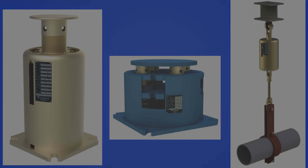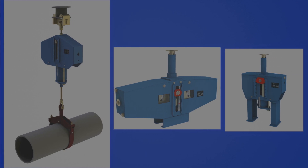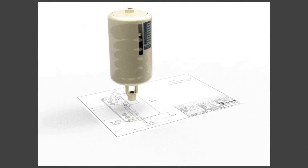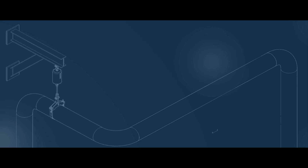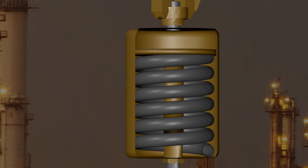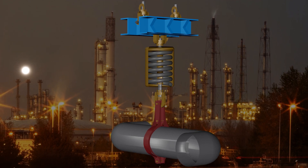Two of the most common static pipe supports that allow thermal expansion and contraction are variable force springs and constant force springs. The variable force spring, or just the variable as it is normally called, is the more commonly used of the two — it is really nothing more than a spring coil inside a can. It is called a variable spring because the force it applies to the pipe varies as the spring compresses or relaxes due to pipe movement.